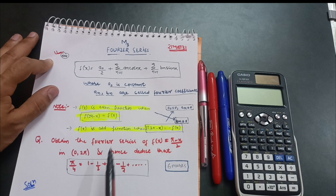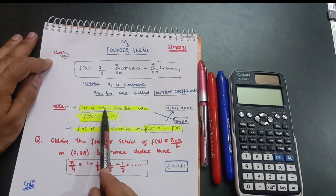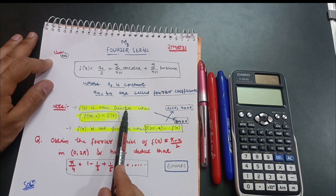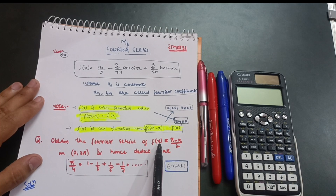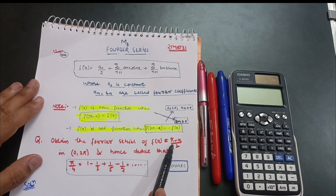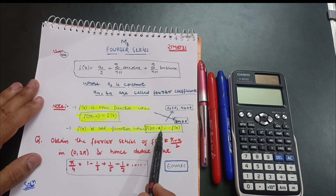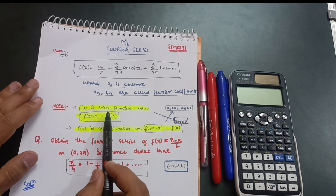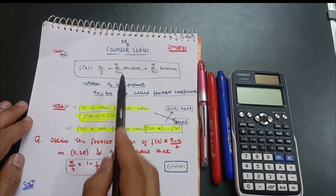Now, let me note: if f(x) is an even function, we check by substituting 2π - x in place of x. If we get back the same positive function, it is even. If we get minus the original function, it is odd. We need to determine whether our function is even or odd before finding the Fourier series expansion.